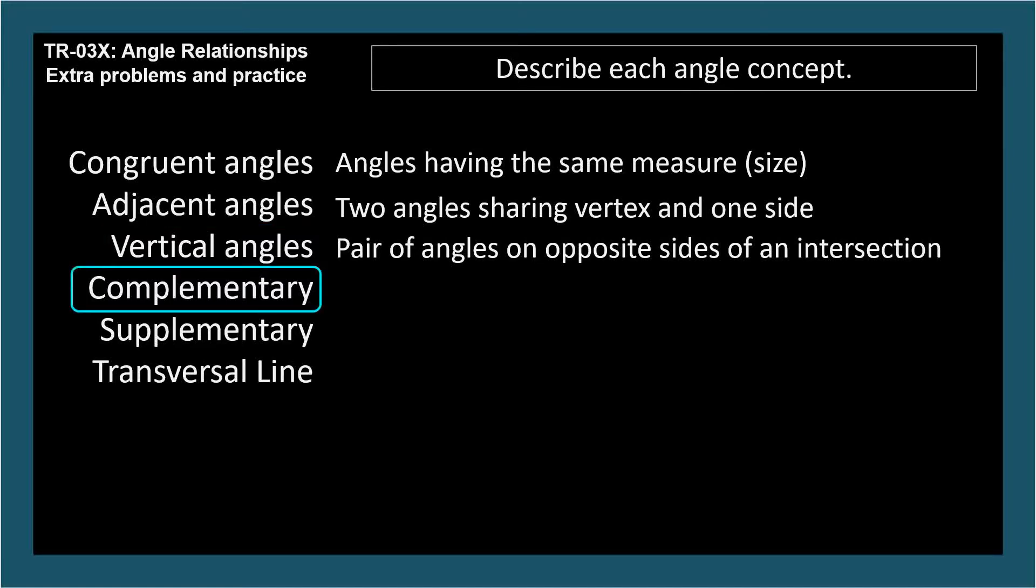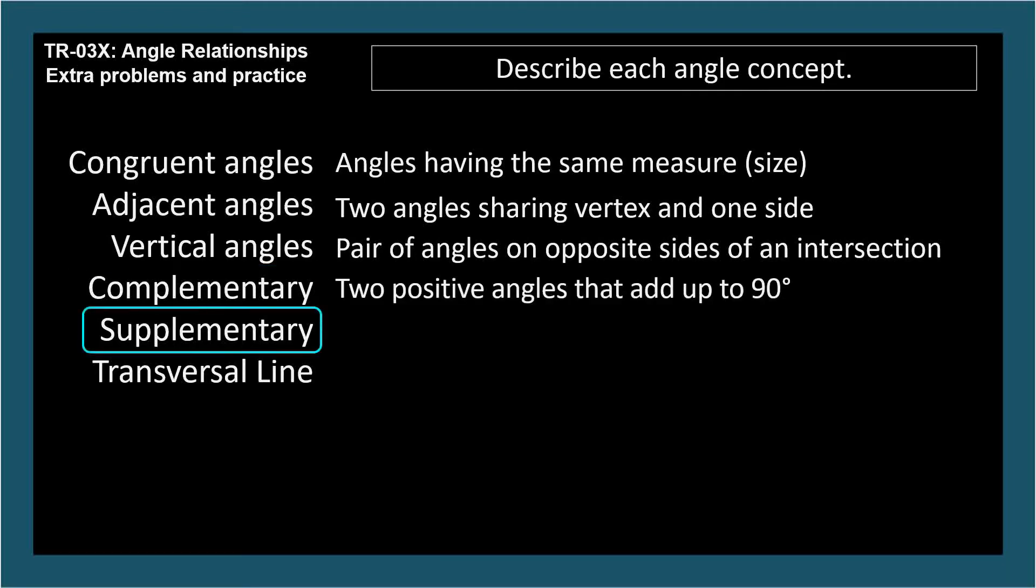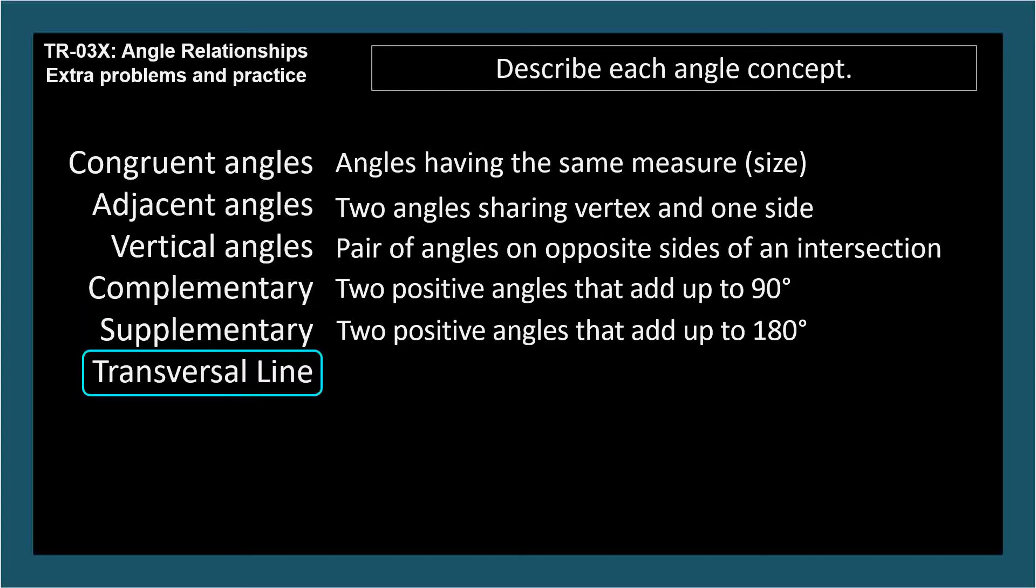Complementary: two positive angles that add up to 90 degrees. Supplementary: two positive angles that add up to 180 degrees. Transverse line: line that crosses two parallel lines at any angle.